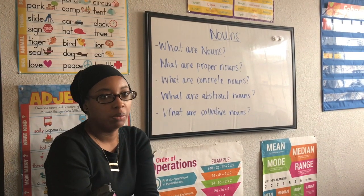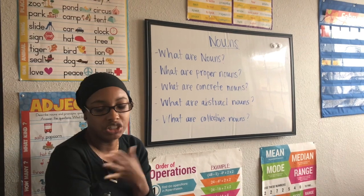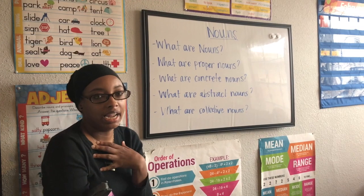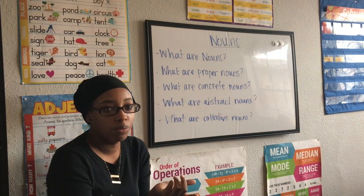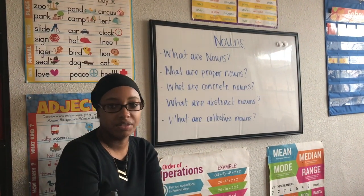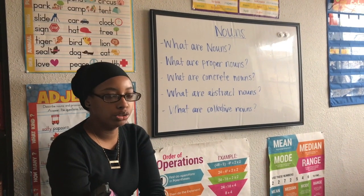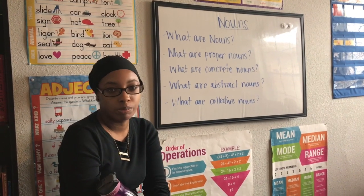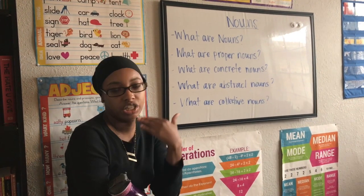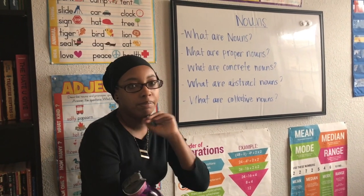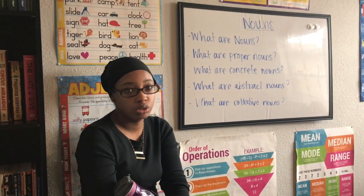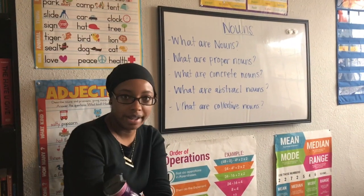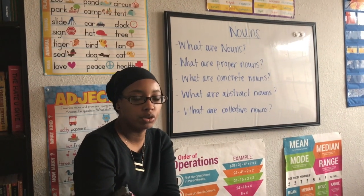So we chose — well, I chose, not the kids — to go over grammar and we're going to talk about nouns today. There are different types of nouns. Usually the younger kids only know the basic noun and what proper nouns are. As the kids get older, they need to know more advanced skills for nouns, which include concrete nouns, abstract nouns, and collective nouns. We'll get through that further in the video.